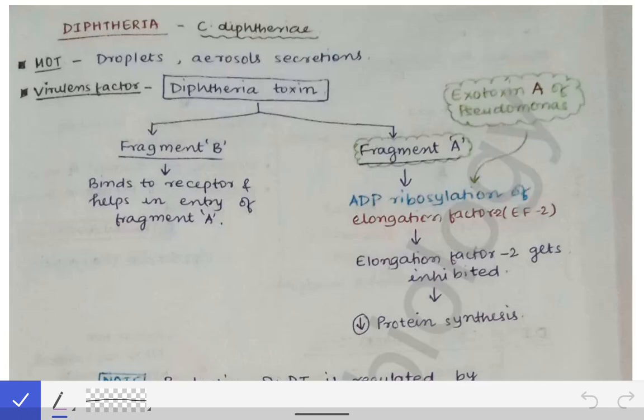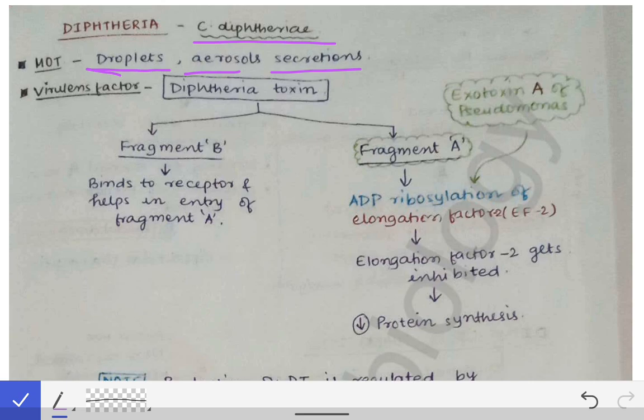Coming to diphtheria proper — in pharyngeal diphtheria, also referred to as faucial diphtheria, the causative organism is Corynebacterium diphtheriae. The mechanism of transmission is via droplets, aerosols, and secretions. This is general knowledge; examiners in viva may ask about the mode of transmission of the diphtheria infection or faucial diphtheria.